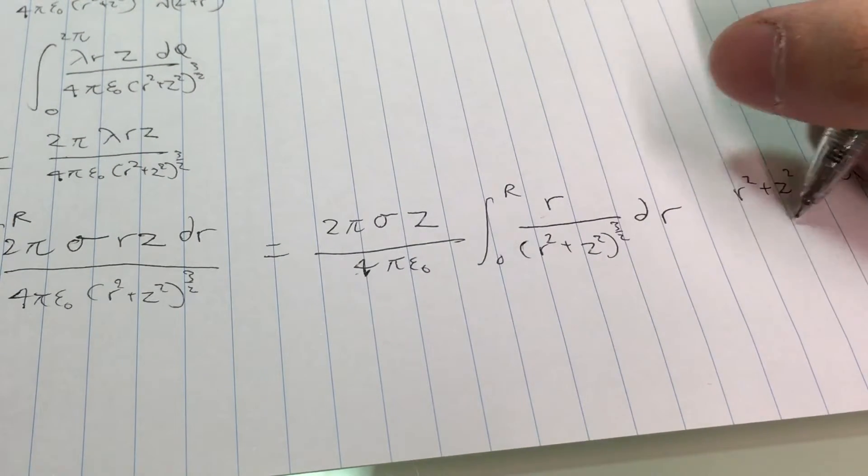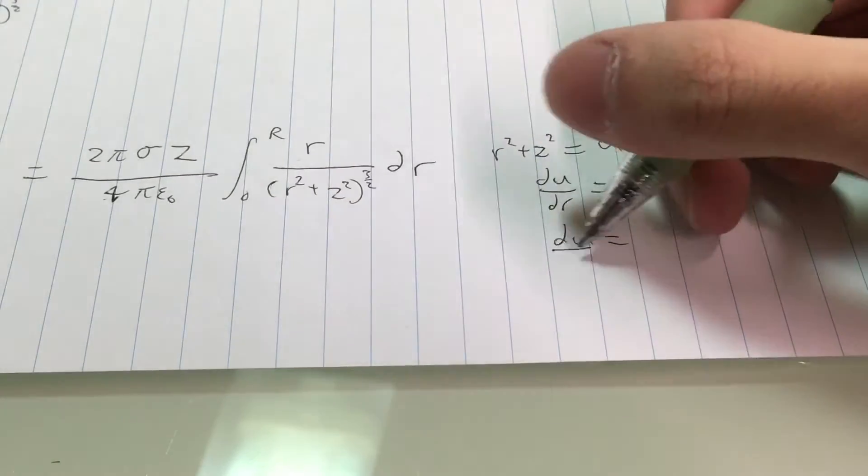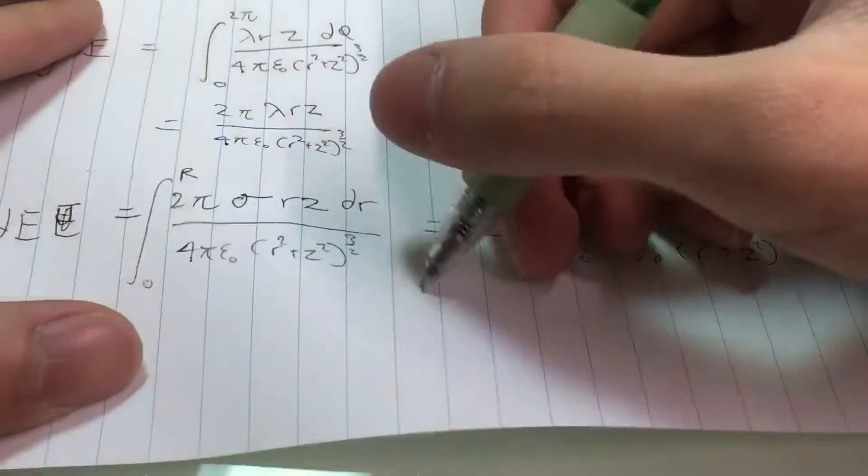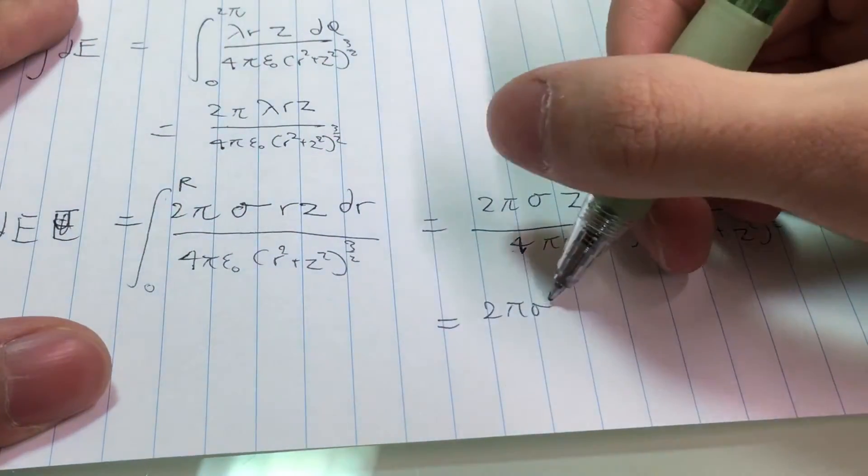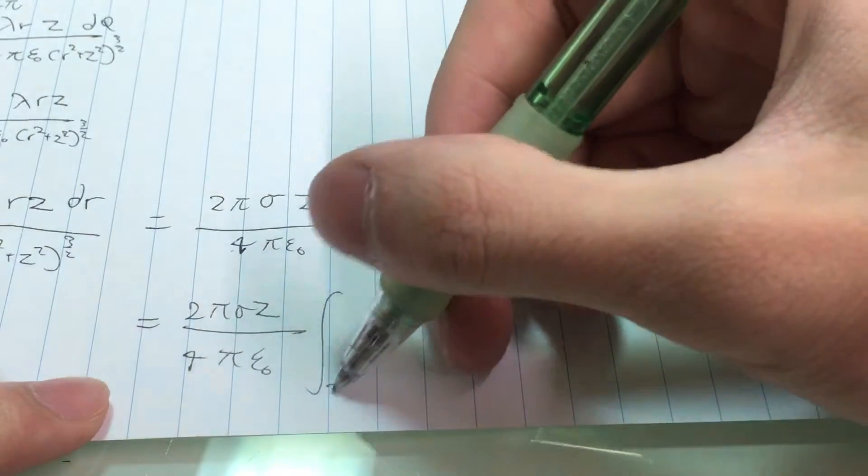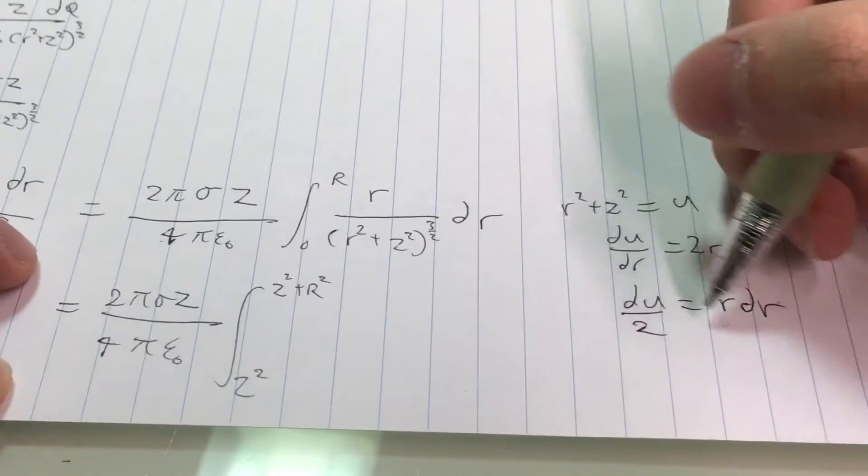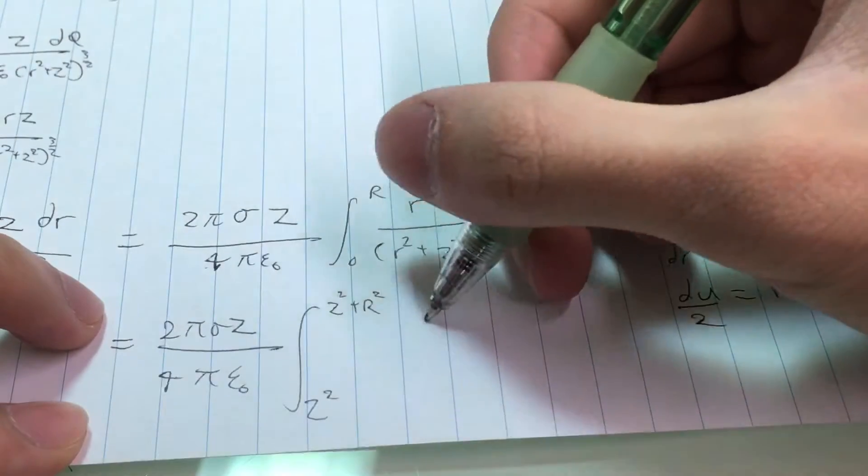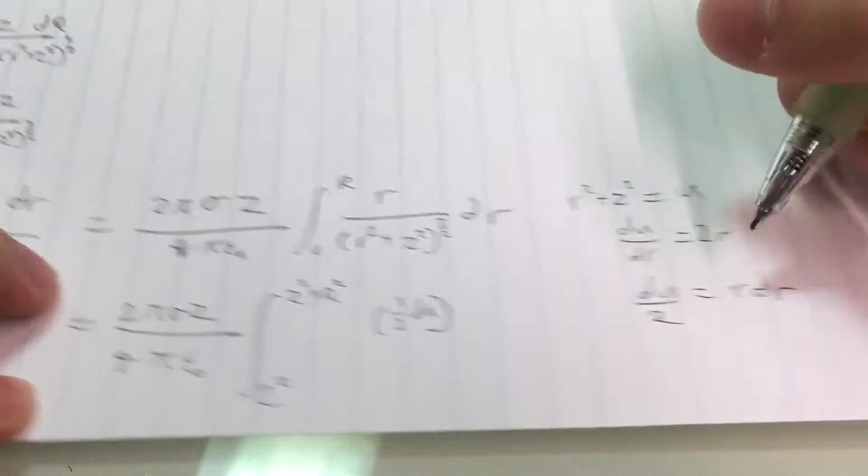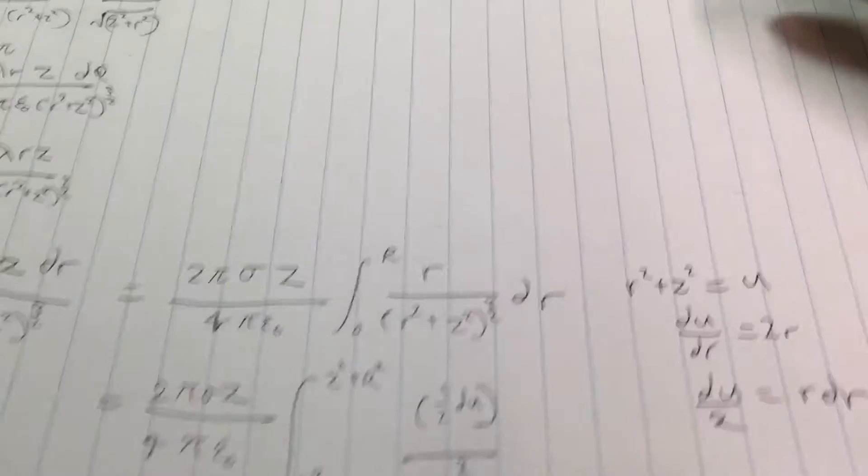Let that equal to U. dU/dr is 2R, so 1 over 2 dU is R dr. We'll just substitute that into this integral. The range goes from when R is equal to 0, U is equal to z squared. When R is big R, then it's z squared plus big R squared. And r dr is equal to 1 over 2 dU. This bottom piece is really just U to the 3 over 2 power.